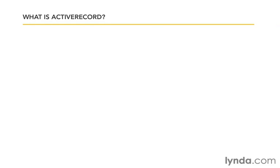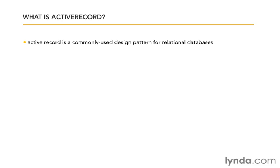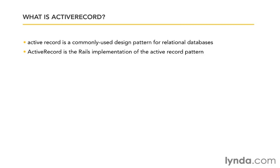First, what is Active Record? Active Record, when written as two separate lowercase words, refers to a commonly used design pattern for working with relational databases. It's not Rails specific — you can use the Active Record pattern in a number of different languages. Active Record, when written as one word with a capital A and R, refers to the Rails implementation of that pattern. Most times you can use the two terms interchangeably, but it's helpful to understand the context and know the difference.